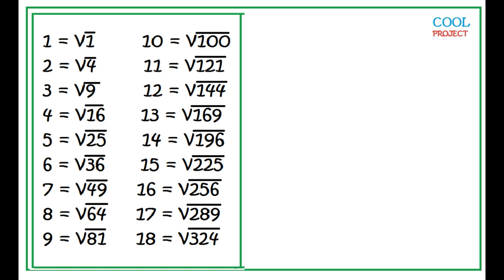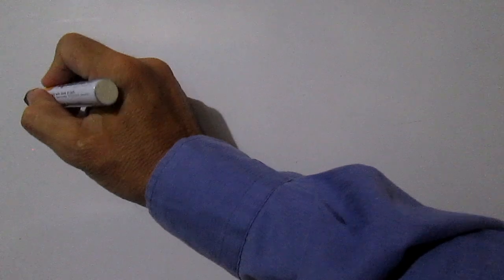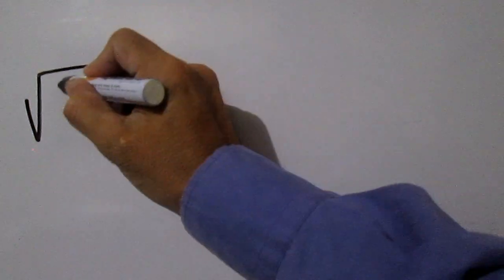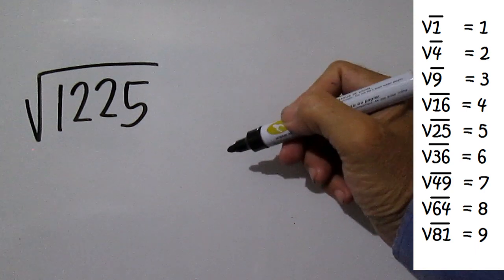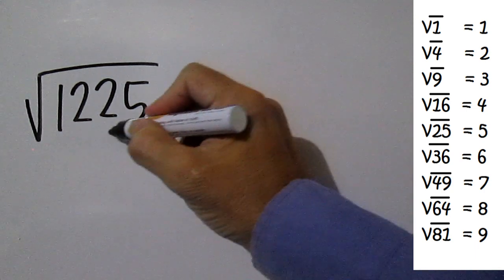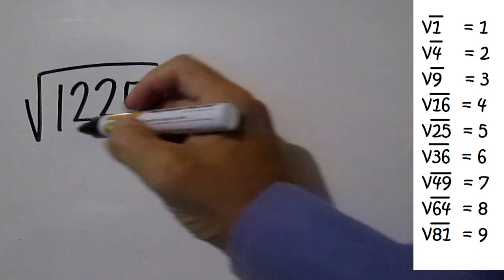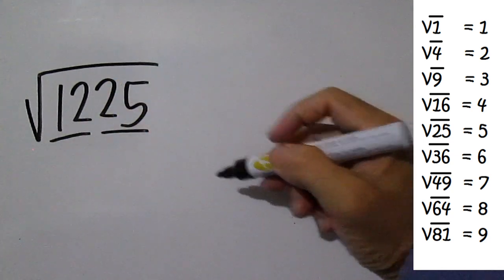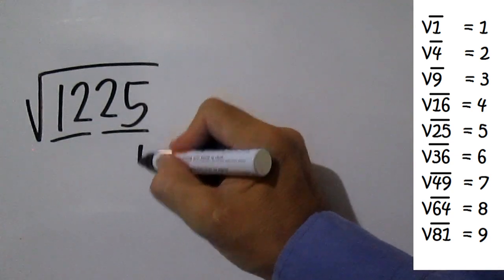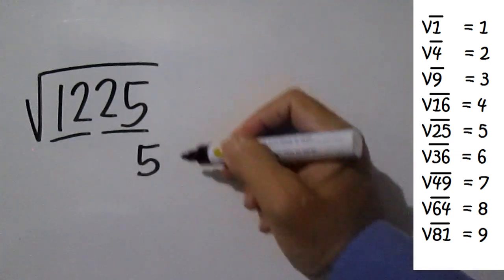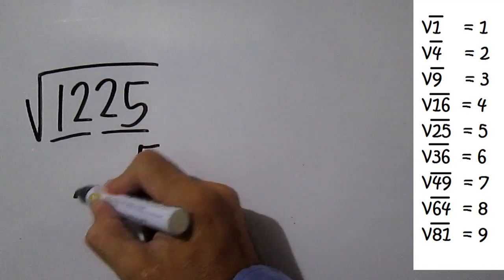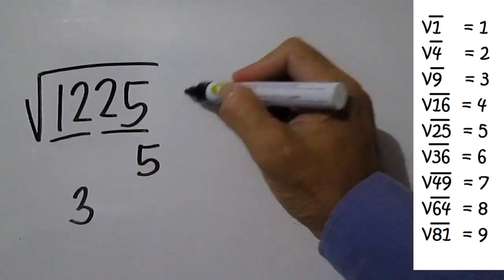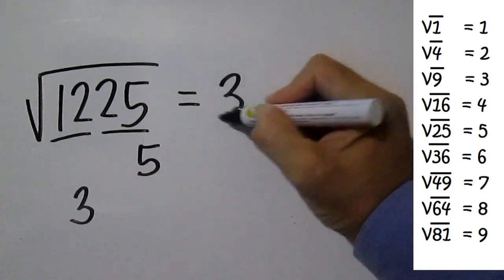Let's find the square roots of some perfect squares beyond 324. Find the square root of 1225. First, group the first two digits together and the next two digits together. The square root of the perfect square that ends with 5 is 5. The square root of the perfect square less than or equal to 12 is 3. The square root of 1225 is 35.